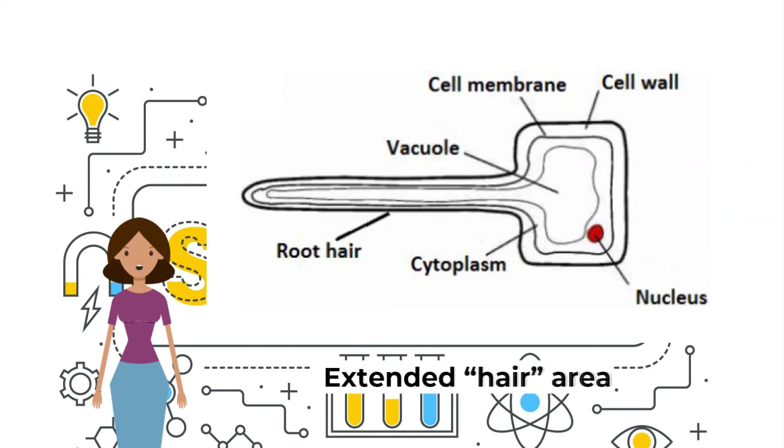Root hair cells have an extended hair area to maximize surface area for absorption of water and ions. Root hair cell sap vacuoles are very high in solute concentration. This is to make the water potential gradient down into the cell. The soil's water potential is higher than the cell, so water will enter the cell through osmosis. Root hair cells don't have chloroplasts, but they have all the other organelles that a plant cell does. Because they are underground, they are not going to get the light anyway, so it is inefficient and a waste of material to make chloroplasts.